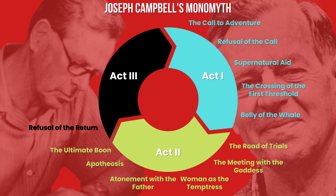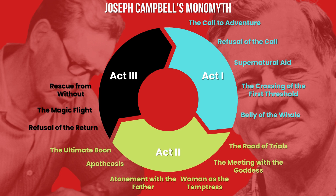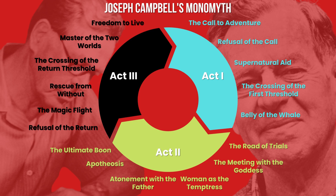The return, or Act 3, begins with the refusal of the return — similar to Act 1, the hero is reluctant to go back to the ordinary world because of the thrill and enlightenment of their epic journey. However, the magic flight causes the hero to escape from those who wish to reclaim whatever enlightenment or object they've acquired. Rescue from without is the next stage, where the hero receives help to make it back home. They then enter the crossing of the return threshold, successfully making it back to the ordinary world. After returning, they find balance between who they were before the quest and who they've become — the master of two worlds. Finally, the last stage is the freedom to live, where the hero lives their life at peace, concluding the story.